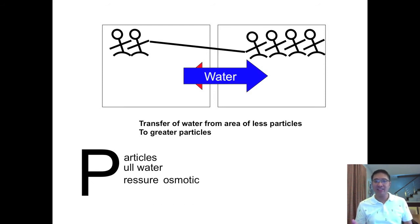And again, as I've said, the number of particles may also be known as the tonicity of the solution. So the higher the particle, the higher the tonicity, the higher the ability to pull water, the higher the osmotic pressure of the solution.